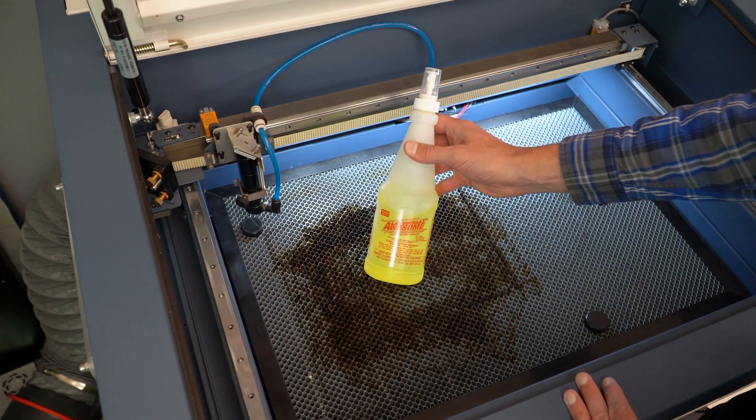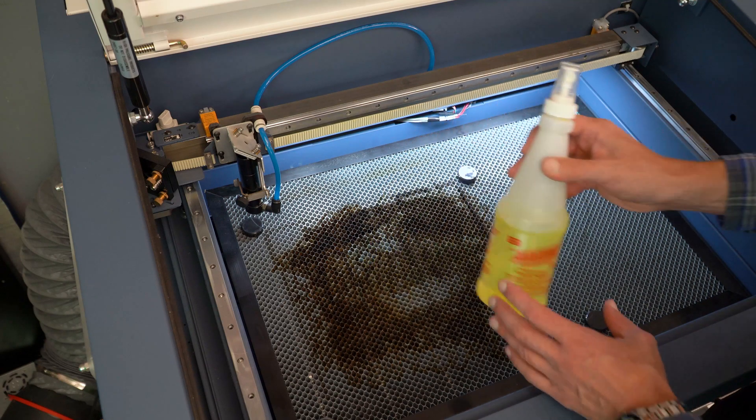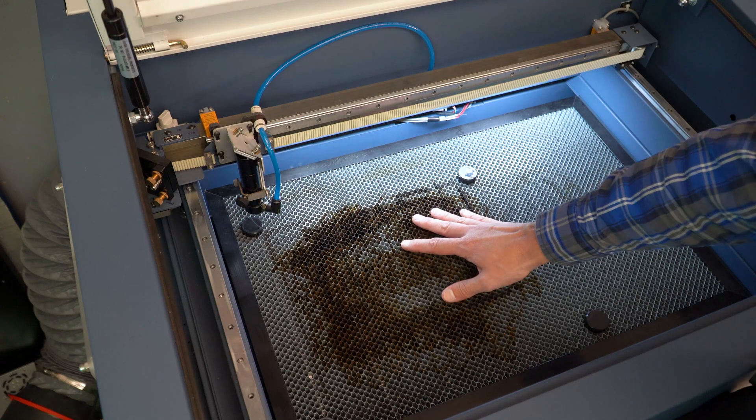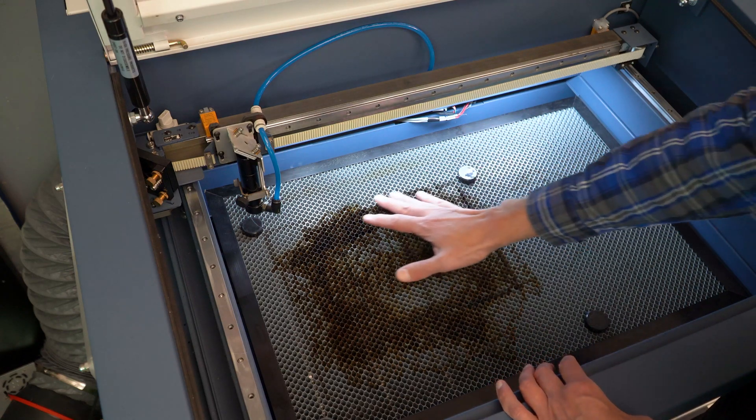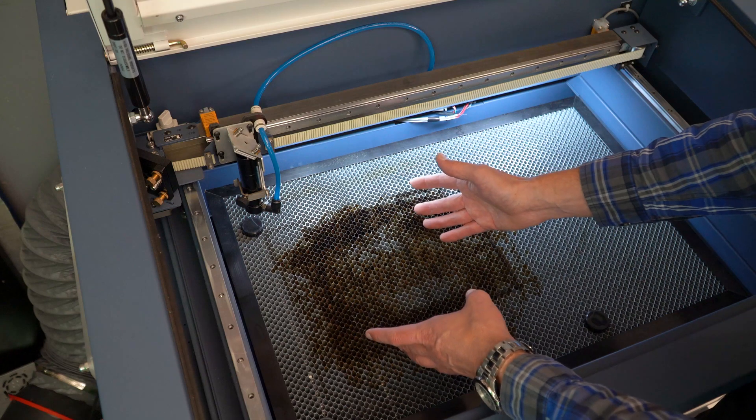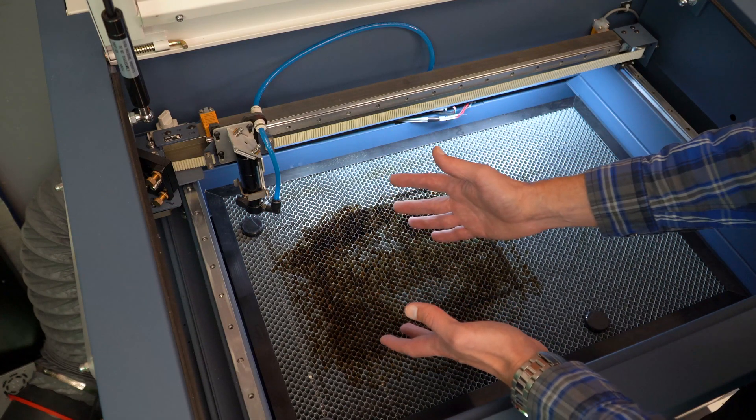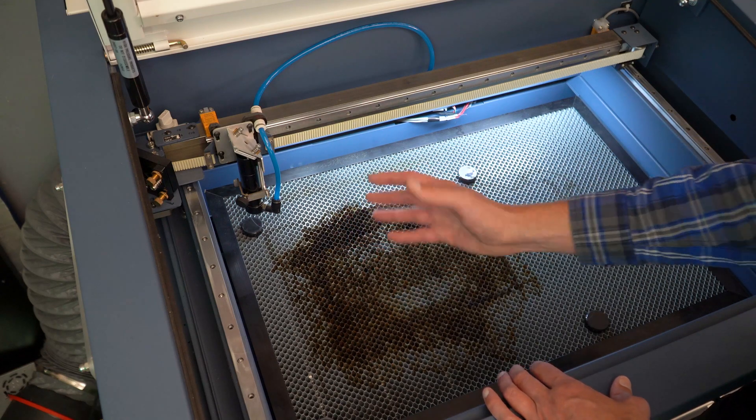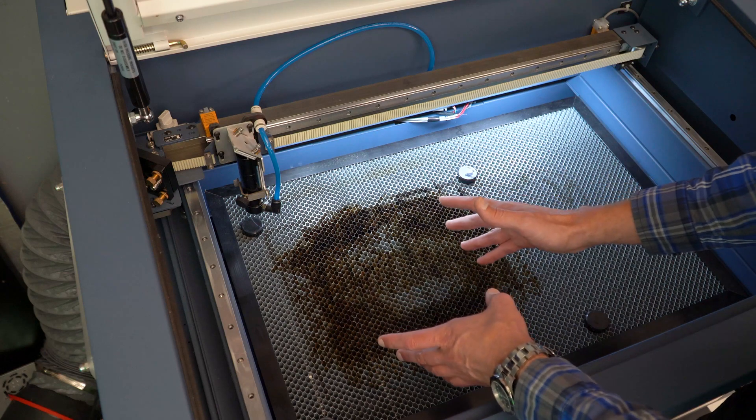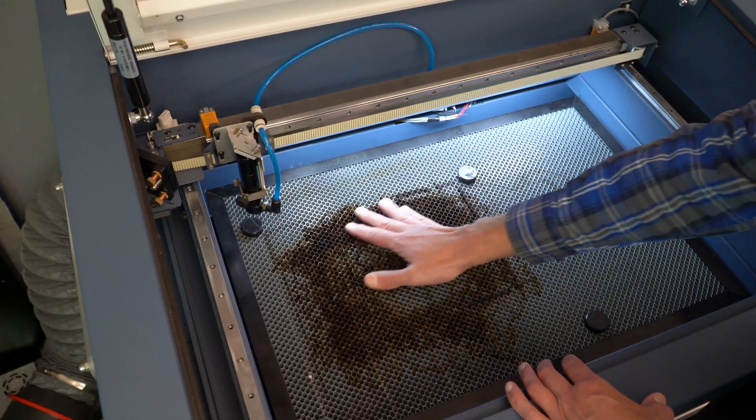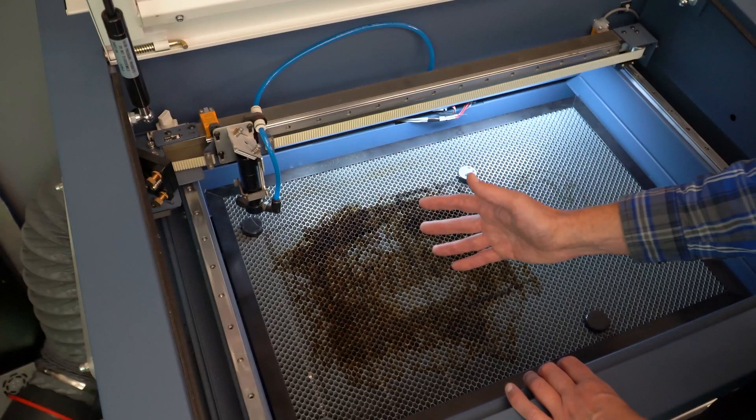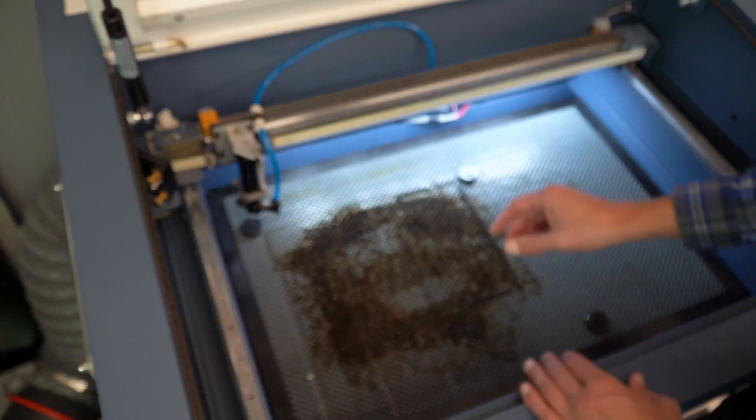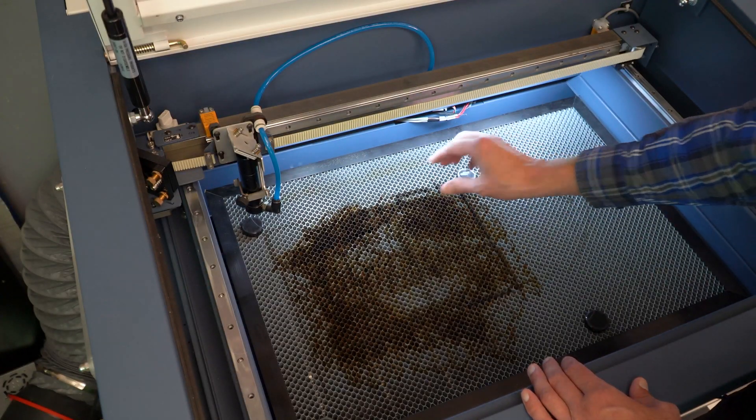You can see that there's some staining from some previous projects, but prior to this project I did clean this using LA's Totally Awesome. This is one of the best products that I've seen that'll just melt away any of this residue that's on the honeycomb. And it's very important that there's no residue that can start on fire on this honeycomb, because when we go to do the cutout of the acrylic, that fire that can start on the honeycomb will mark the bottom side of the acrylic. And just general housecleaning, it is good to clean this honeycomb because this is where a lot of fires start in the work area.